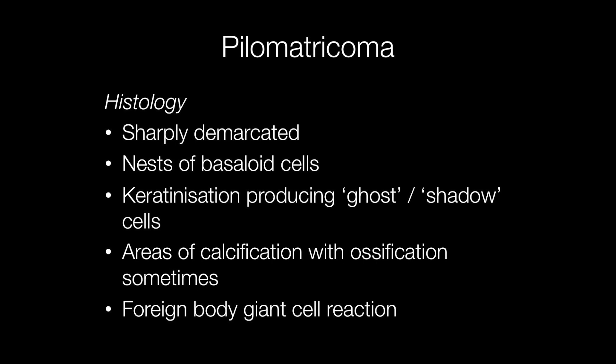Histologically, pilometrichomas are sharply defined. They are composed of nests of basaloid cells that keratinise and eventually lose their nuclei to become ghost or shadow cells. There are also areas of calcification that may, in areas, ossify, and another frequent finding is a foreign body giant cell reaction.